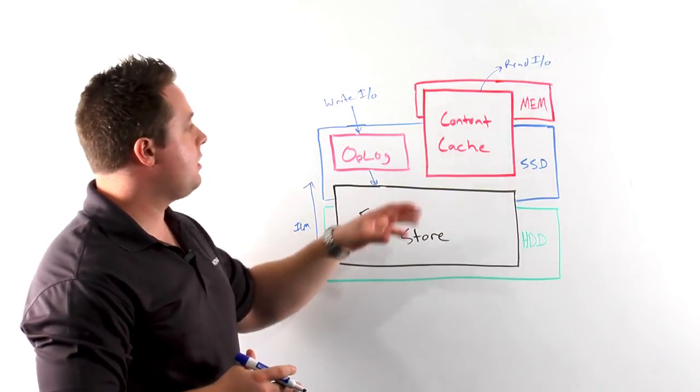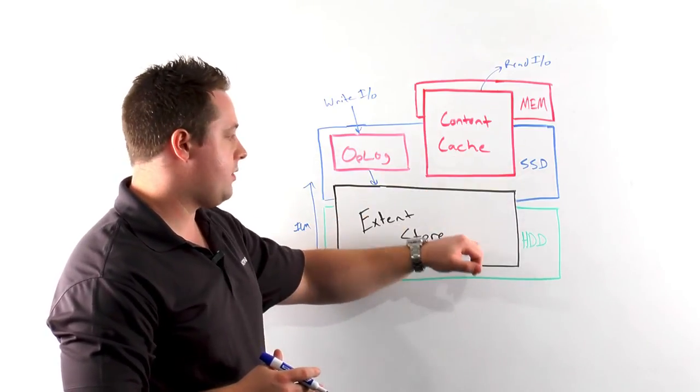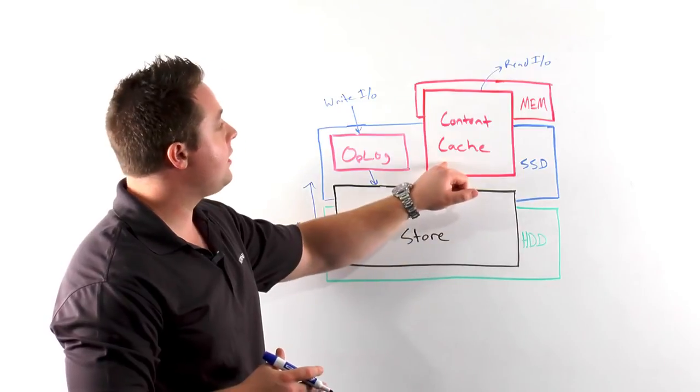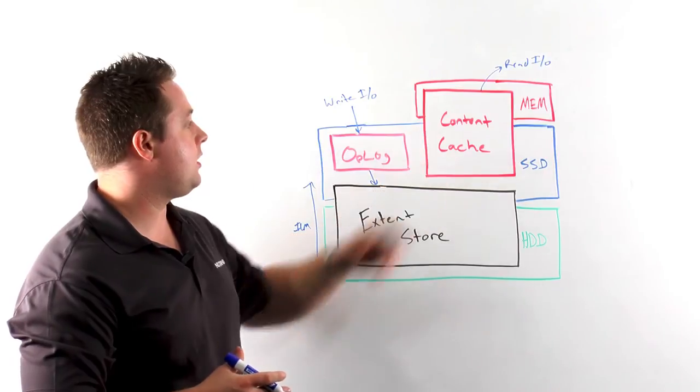On a typical read request, if the data is not currently in the content cache, we will pull the data from the extent store up into the content cache. Then any subsequent read request for that data would be served directly from the content cache.